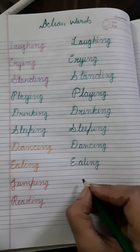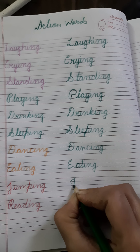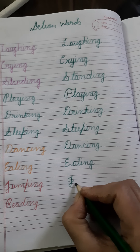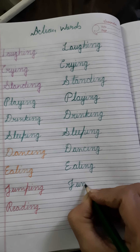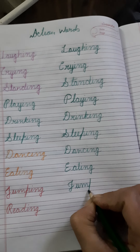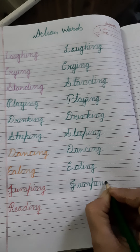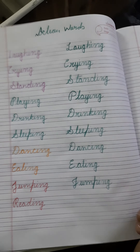This is jumping. Jumping. First make J. M, P, I, N, G. Jumping.